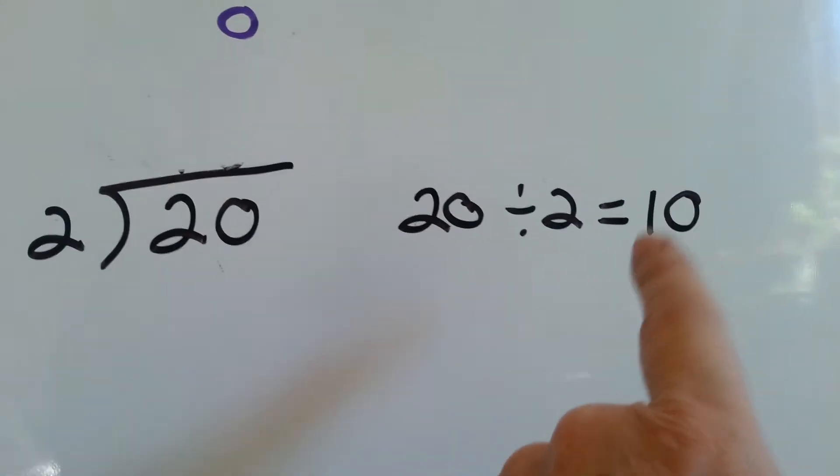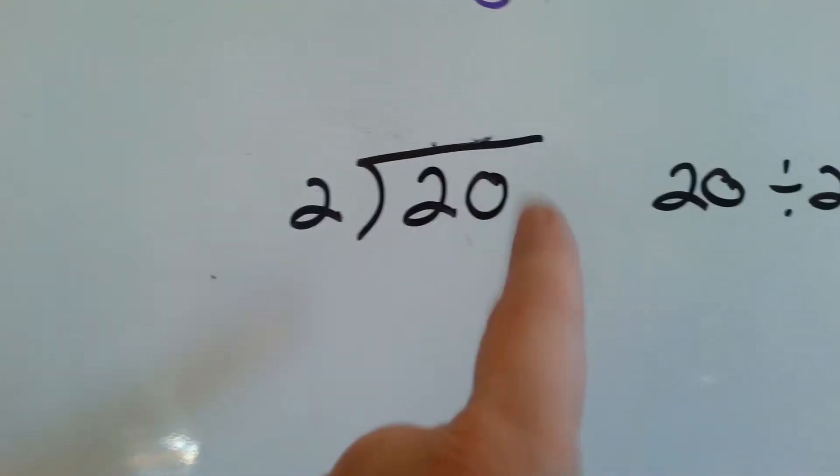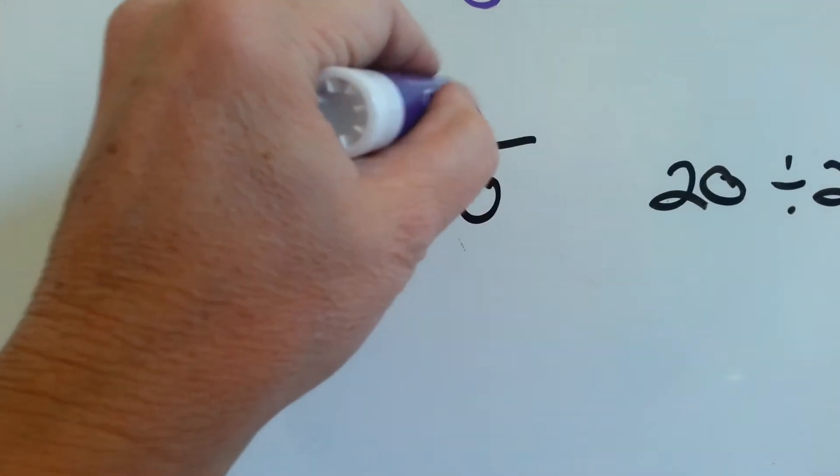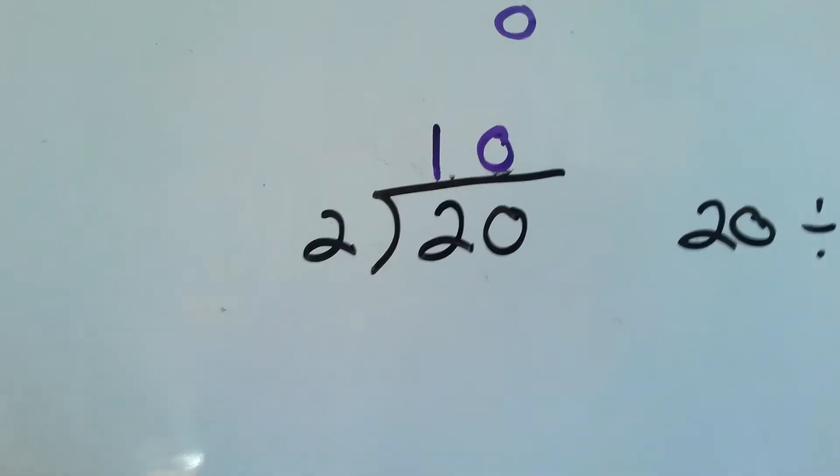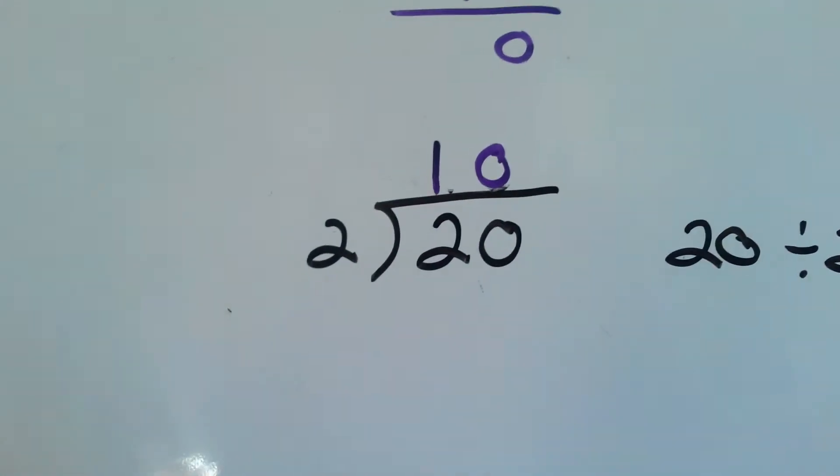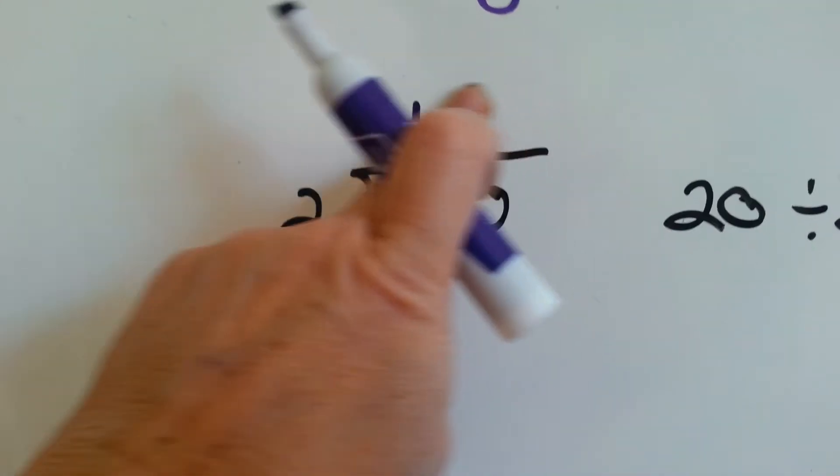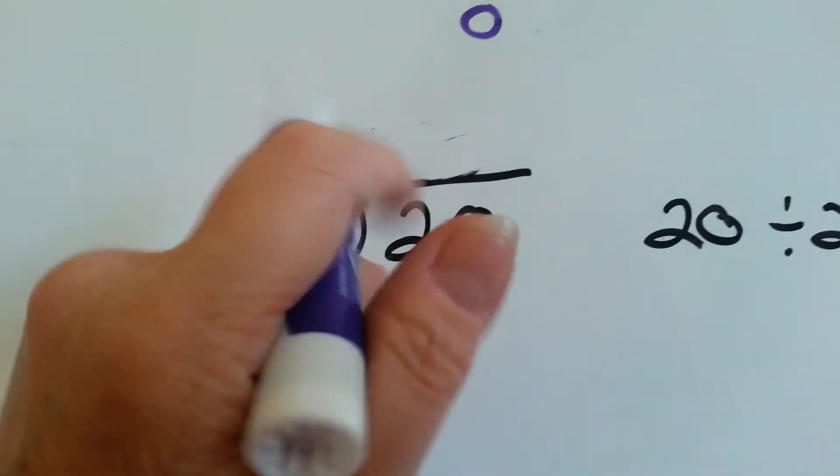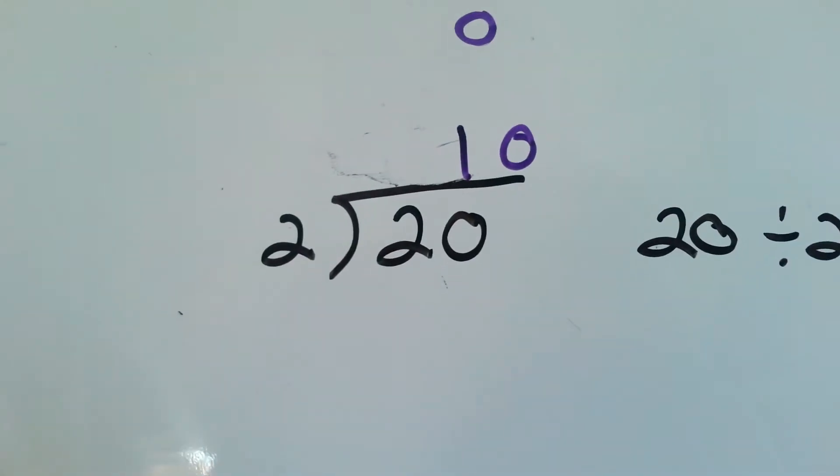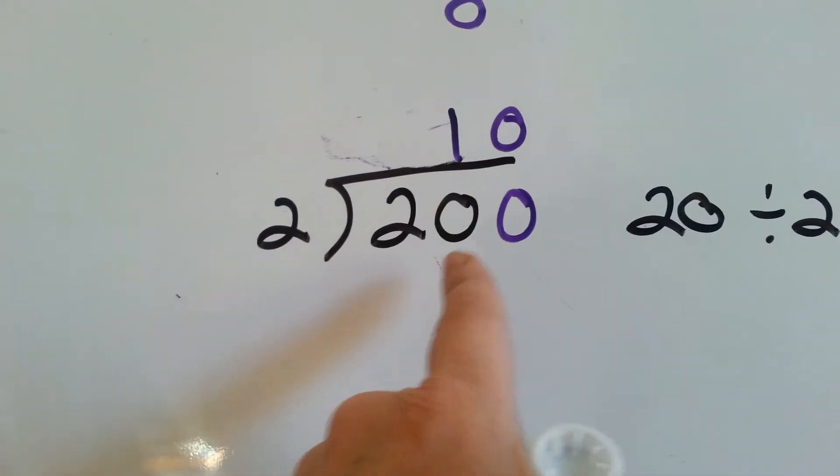Because our answer is 10 and there's two digits and we have two digits here, we are going to put the 1 above the 2 and that above that. The reason we do this, I know some people would think, how come you don't do this? Well, because that means there might be a 0 here.